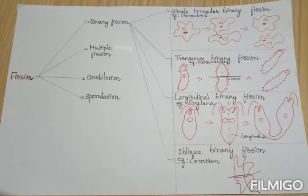The fourth type of binary fission is oblique binary fission. Here, the plane of division is oblique — that is, they are neither parallel nor at right angles. Example: ceratium.